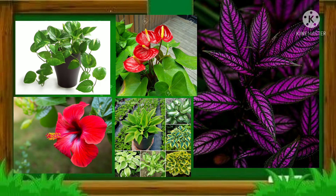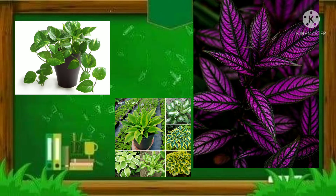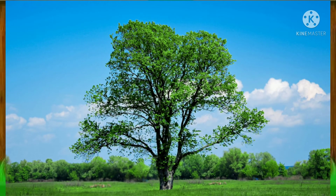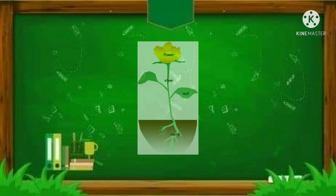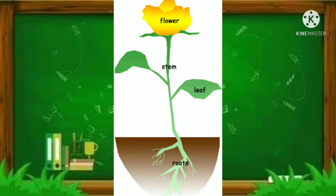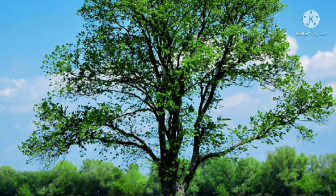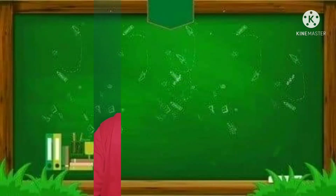Some plants reproduce through their seeds while some utilize other plant parts. A plant is made up of different parts: the roots, leaves, stem, and flowers. Each part has a function to make the plant healthy. Plants play a very important role in our environment, so it is to our benefit to understand more about how they work and how they reproduce.